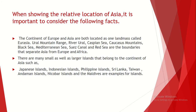When showing the relative location of Asia, it is important to consider the following facts. You should have a good understanding about the following features. The continent of Europe and continent of Asia are both located as one landmass — we call it together as Eurasia, but keep in mind they are two separated continents. The Ural Mountain Range, Ural River, Caspian Sea, Caucasus Mountains, Black Sea, Mediterranean Sea, Suez Canal, and Red Sea are the boundaries that separate Asia from the continent of Europe and continent of Africa.